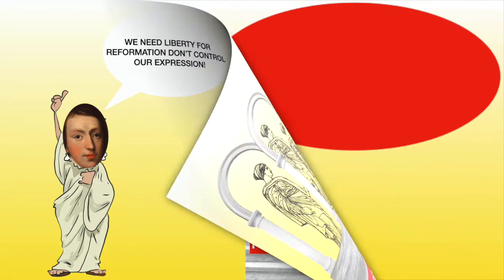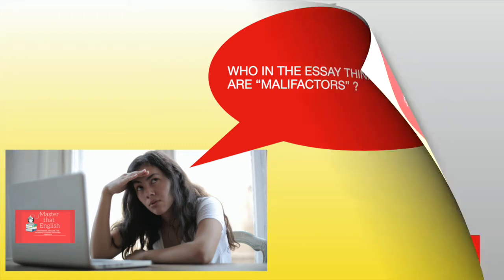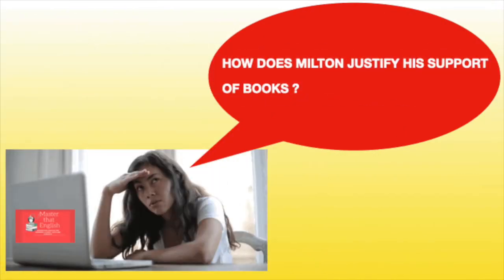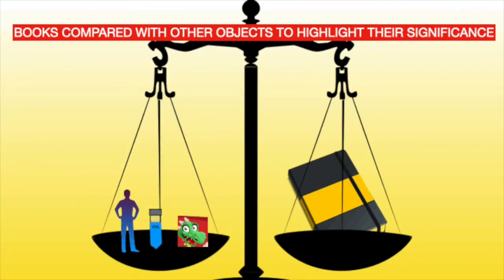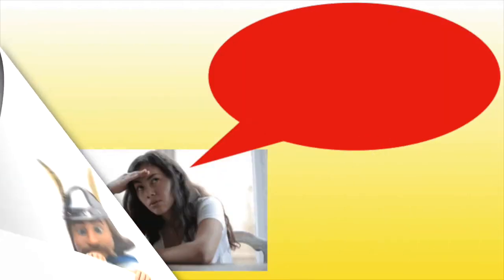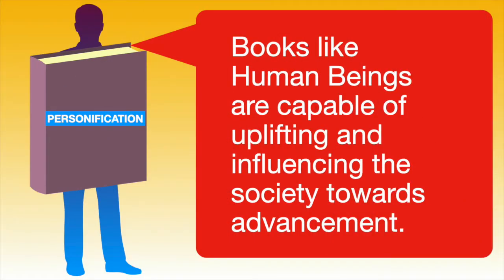A recap question: who in the essay thinks that books are malefactors? It is the Presbyterian government that feels books with revolutionary ideas have a negative impact on society. How does Milton justify his support of books? He provides the significance of books by comparing them with other objects and defends his argument with biblical and mythological references. Milton also personifies books because, like human beings, they are capable of uplifting and influencing society towards advancement.